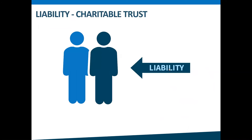A charitable trust is unincorporated, therefore if anything goes wrong the liability usually lies with the trustees, unless this is excluded by the trustee.